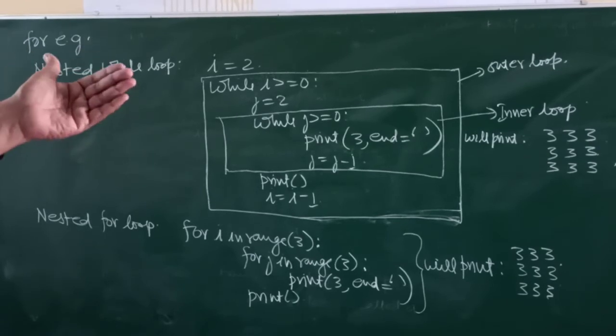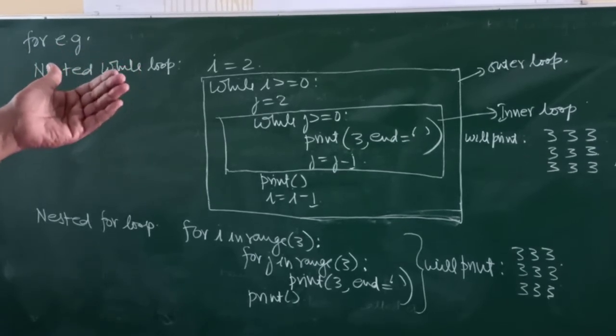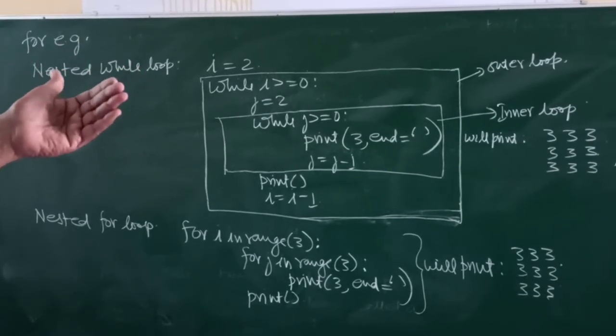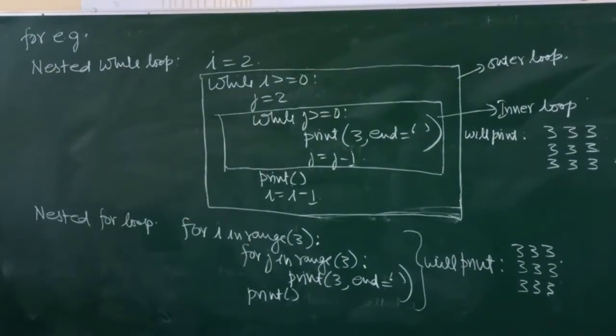So it will print 3, 3, 3 in the first line, 3, 3, 3 in the second line, 3, 3, 3 in the third line.